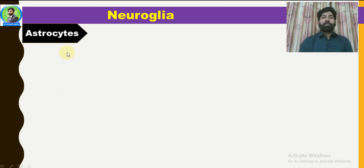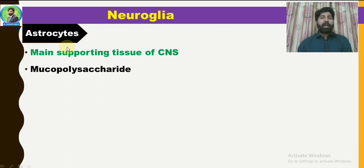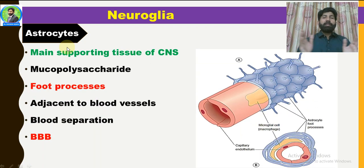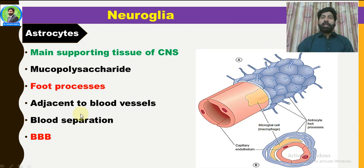First of all, I want to discuss astrocytes. Why are these called astrocytes? Because they are star-shaped. They are the main supportive tissue of the CNS. They are present in the mucopolysaccharide ground matrix. They have fine processes called the foot processes. They are present adjacent to the blood vessels and cover the blood vessels like sleeves.